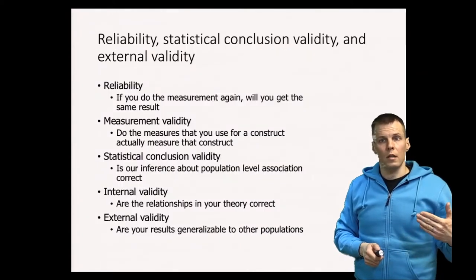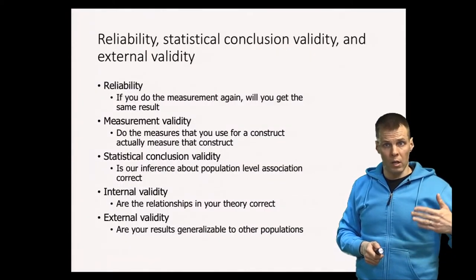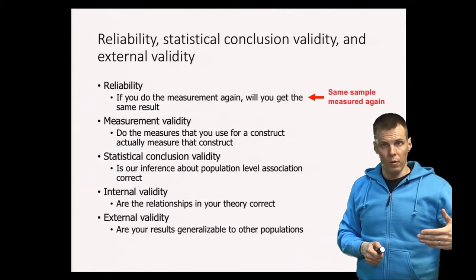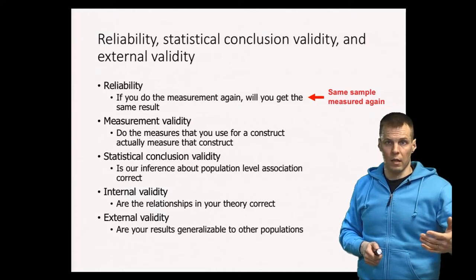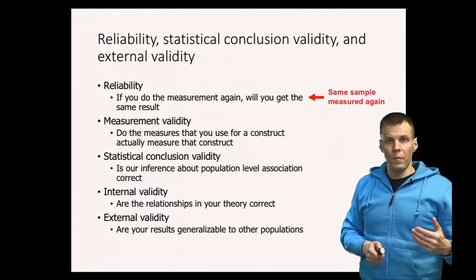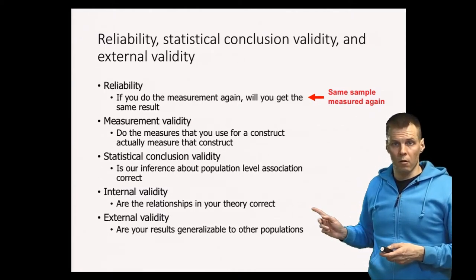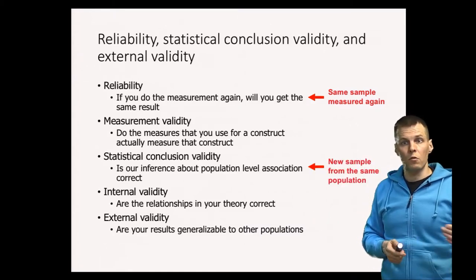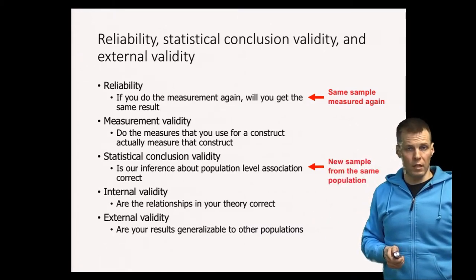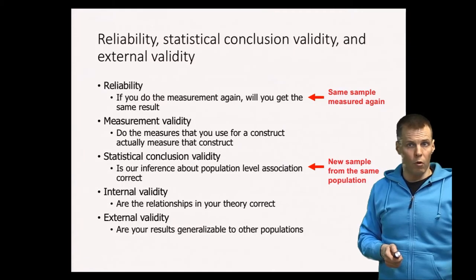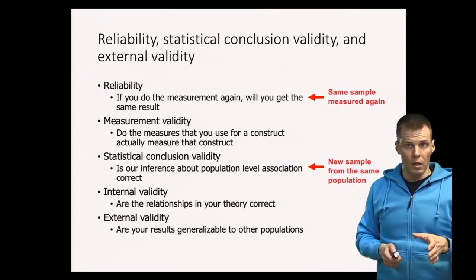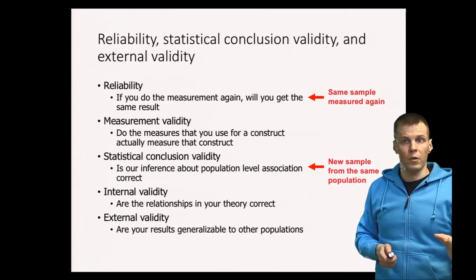We can also look at this through the hierarchy of reliability and validity. Reliability is whether, if you have the same sample and measure it again, you get the same result. Sampling error relates to statistical conclusion validity — if you have a new sample from the same population, do you get the same result? If you don't get the same result from a new sample, you have either a reliability problem or a sampling error issue. If you get a different result from the same sample, then it is a reliability issue.